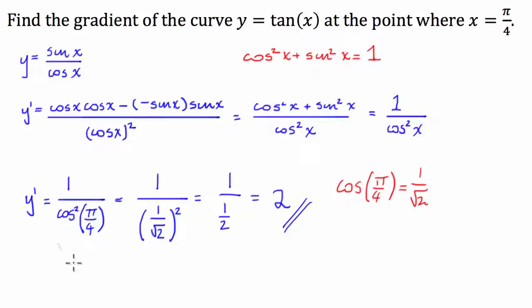So therefore we can say that the gradient of the curve y equals tan of x at the point where x is pi over 4 is equal to 2, or dy dx evaluated when x equals pi over 4 equals 2.